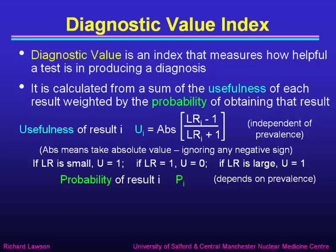The other component is the probability of obtaining that result. If the probability of obtaining result i — a positive or a negative result — is p_i, which clearly depends on the prevalence in the population, then Jim defined the diagnostic value like this: the log to the base 10 of the diagnostic value is the sum over i of the probability of that result multiplied by the usefulness of that result. The reason for including the log is merely to get something with a reasonable range.